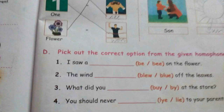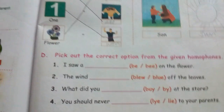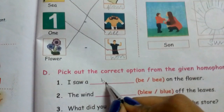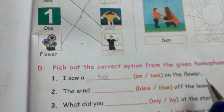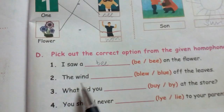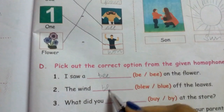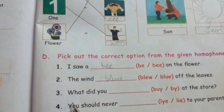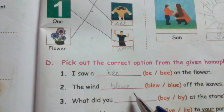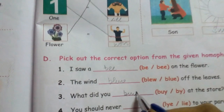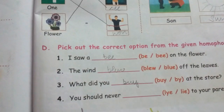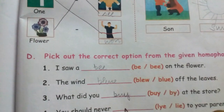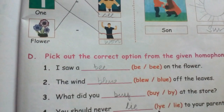Pick out the correct option from the given homophones. I saw a bee — B-E-E — on the flower. The wind blew — B-L-E-W — the leaves. What did you buy — B-U-Y — at the store? You should never lie to your parents — L-I-E.